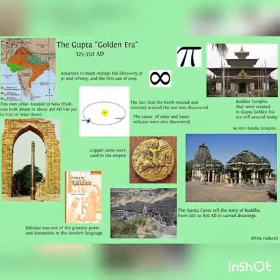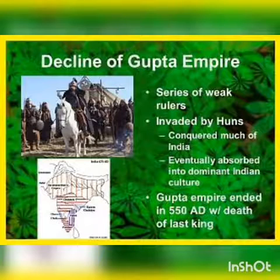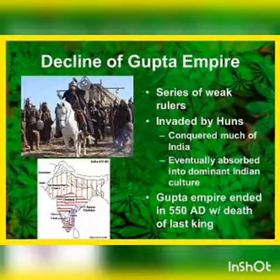The causes of the decline of the Gupta Empire include a series of weak rulers and the invasions of the Hunas, who conquered much of India but were eventually absorbed into the dominant Indian culture. The Gupta Empire ended in 550 AD with the death of its last king. Thank you for watching — please subscribe to my channel.